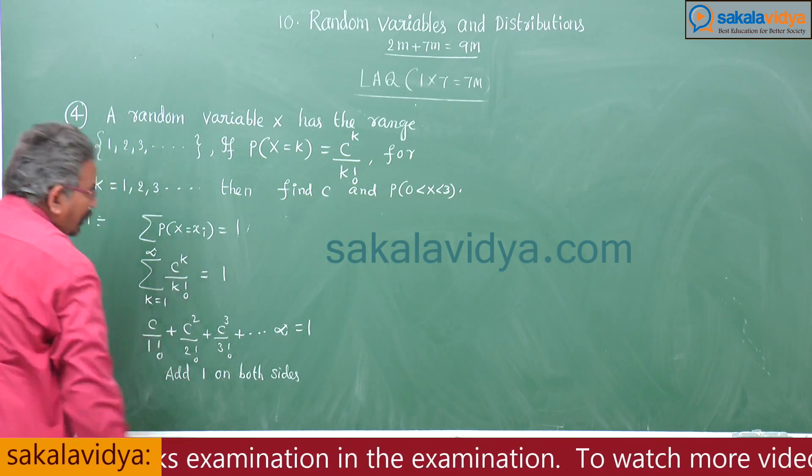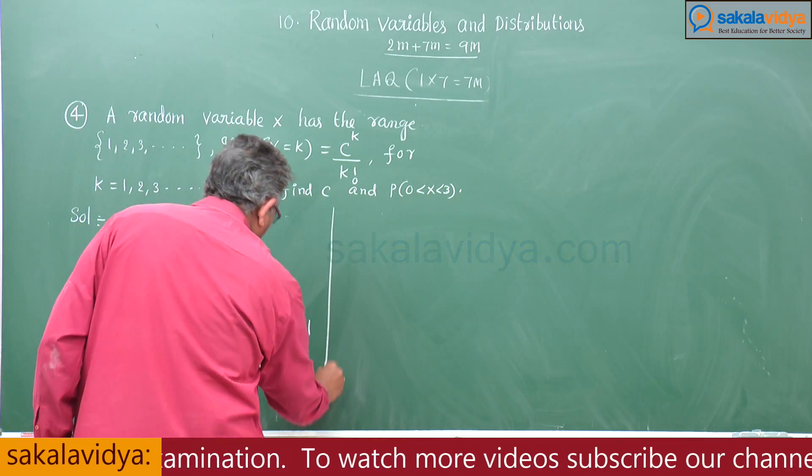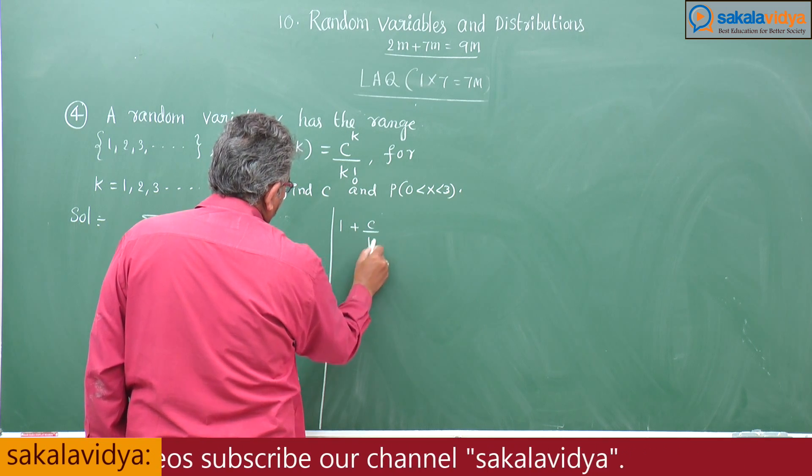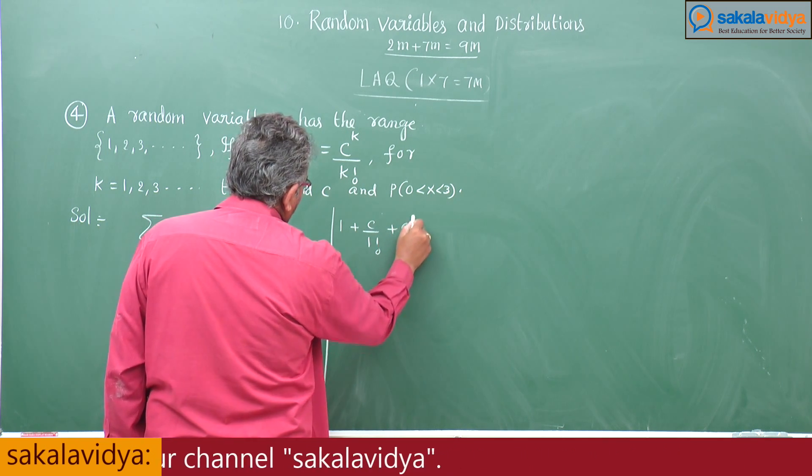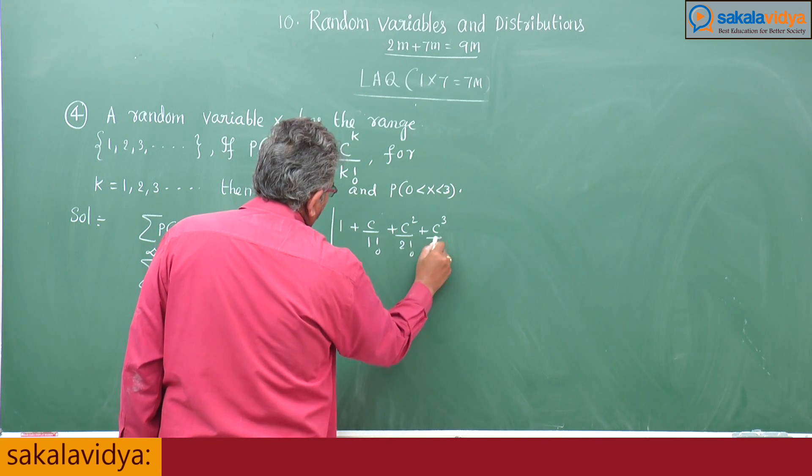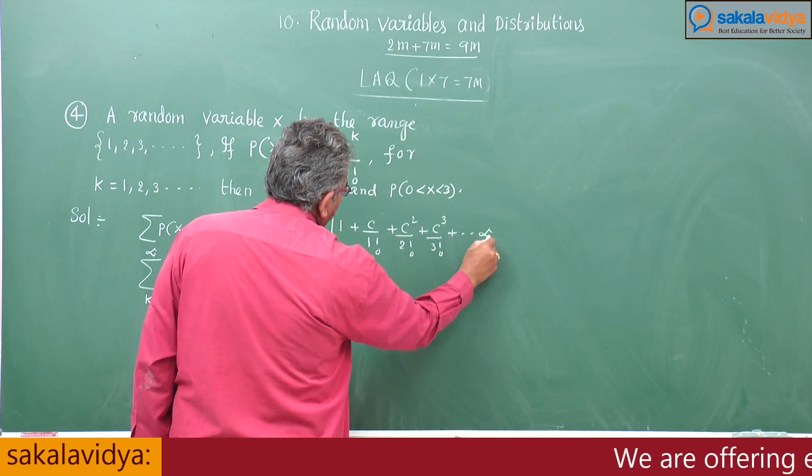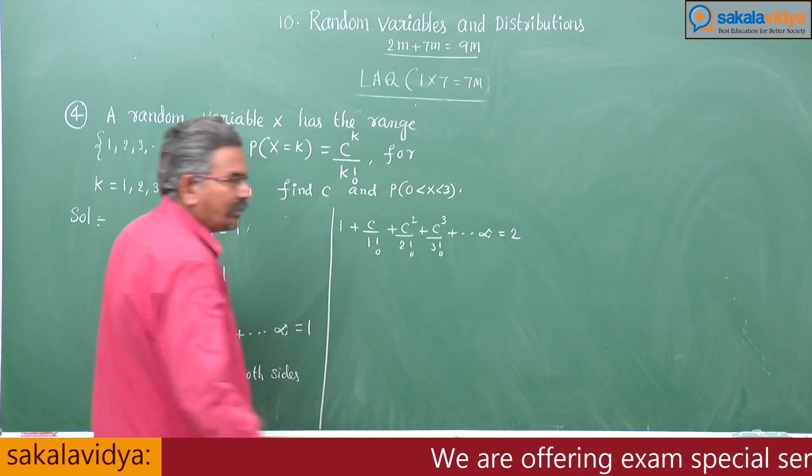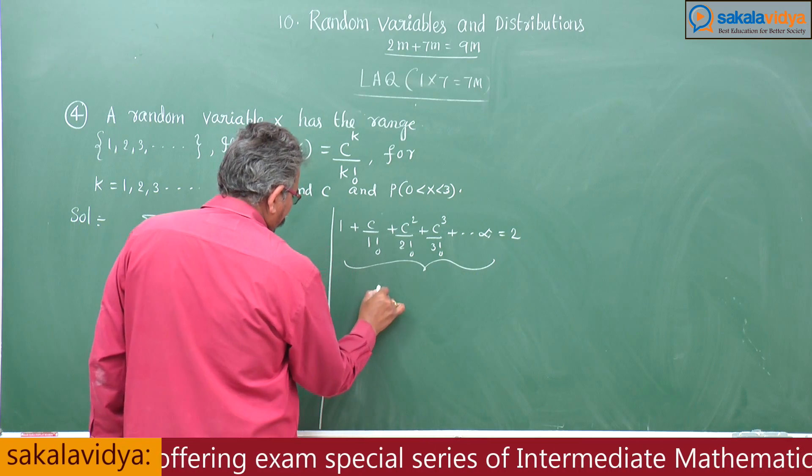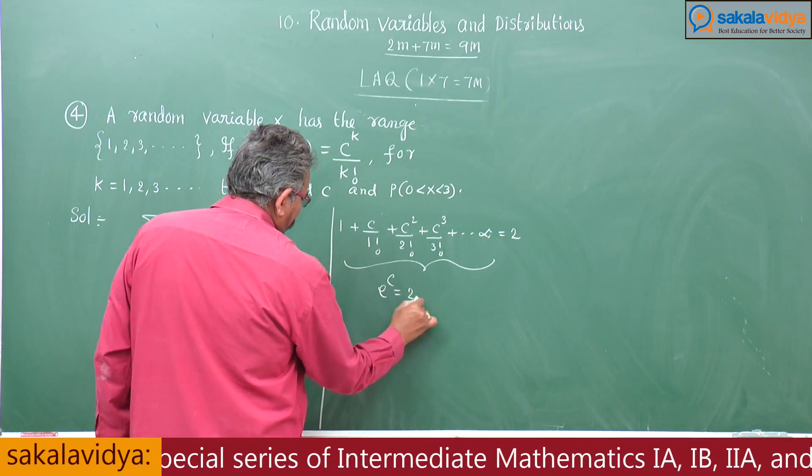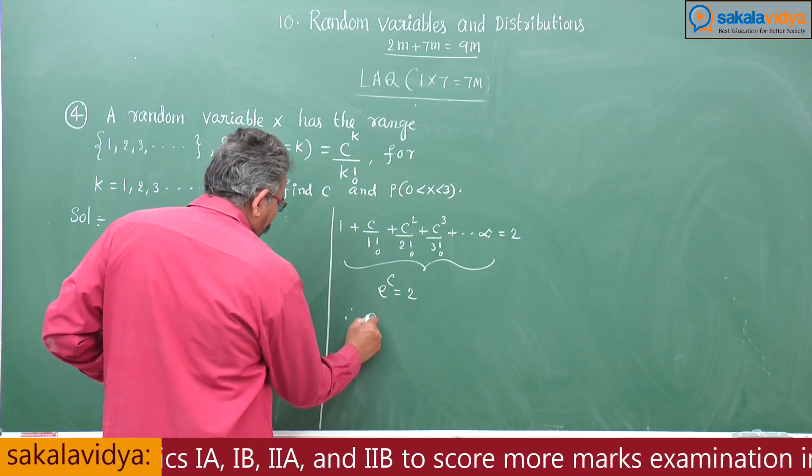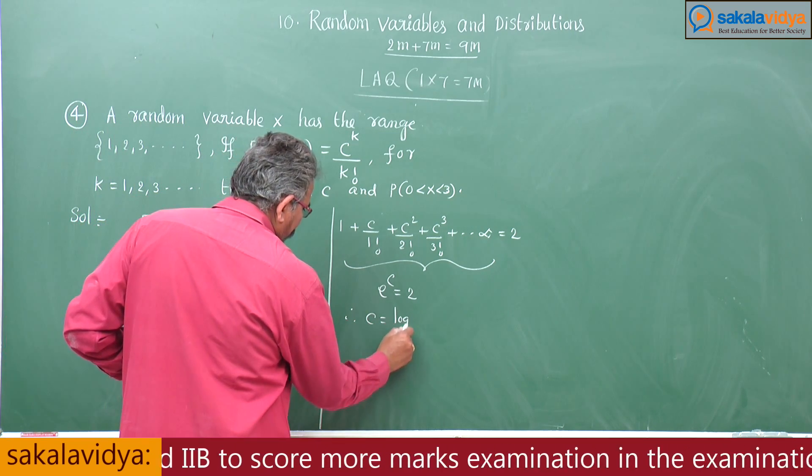If you add 1 on both sides it becomes 1 plus c by 1 factorial, c square by 2 factorial, c cube by 3 factorial and so on to infinity is equal to 2. This series is nothing but e power c. This is exponential form. You have to change to logarithmic form, therefore c is equal to log 2 base e.